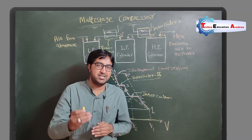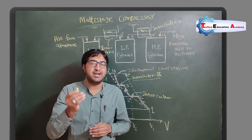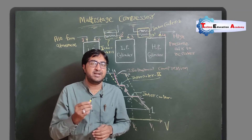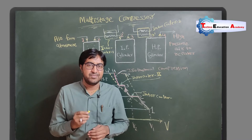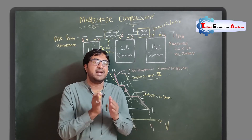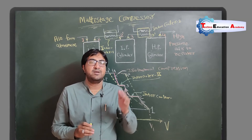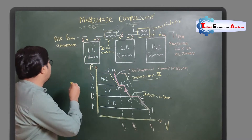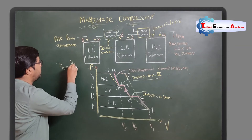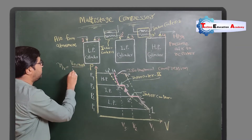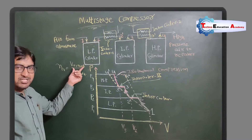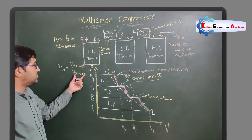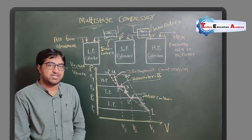Whenever we increase the compression ratio, the temperature of the air increases. We know that density is a function of temperature — whenever we increase the temperature, the density of the air decreases, and the same compressor will handle more quantity of air, so volumetric efficiency decreases. Volumetric efficiency is the ratio of actual volume of air delivered to the compressor divided by swept volume.